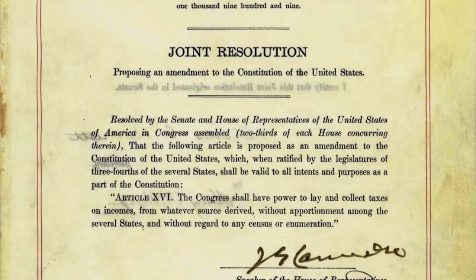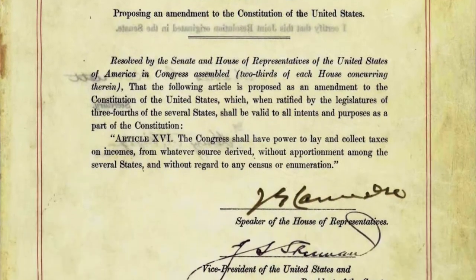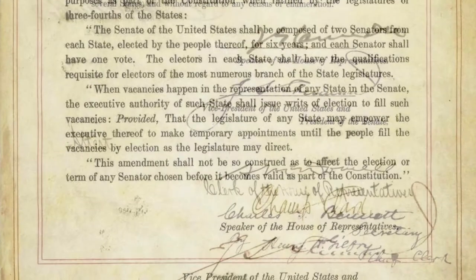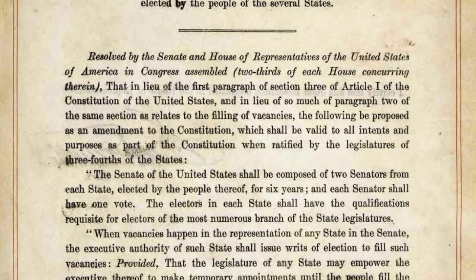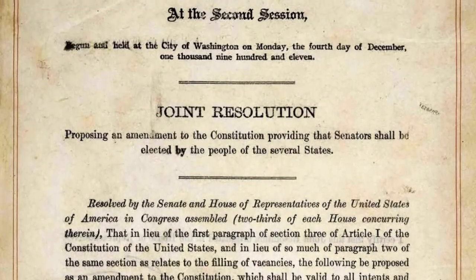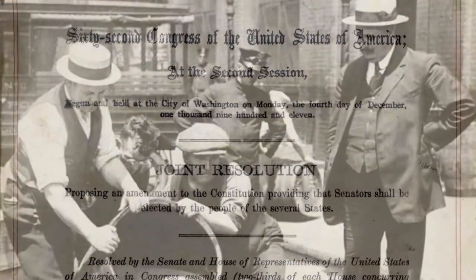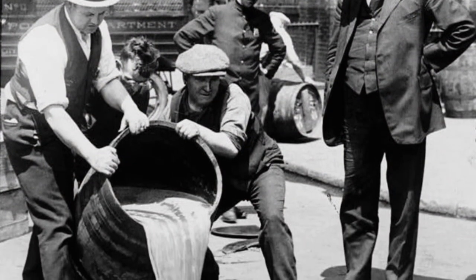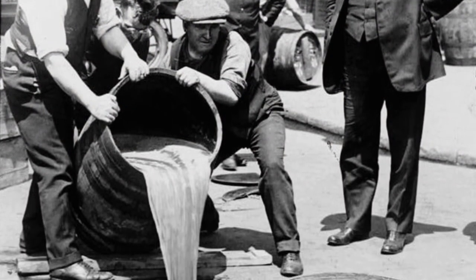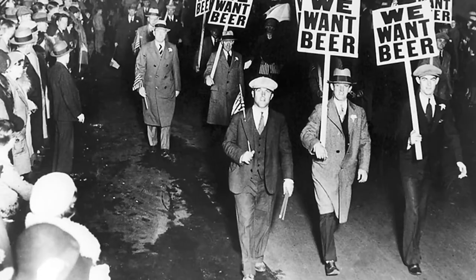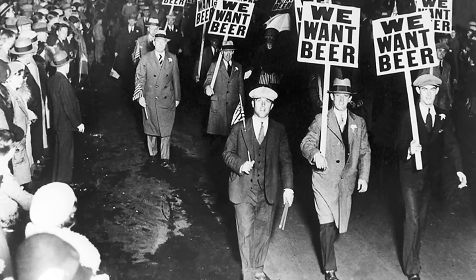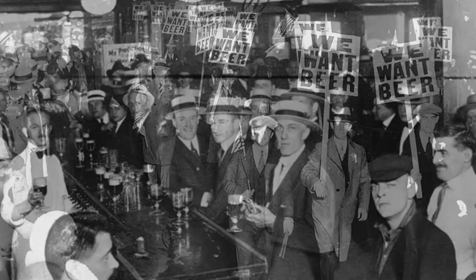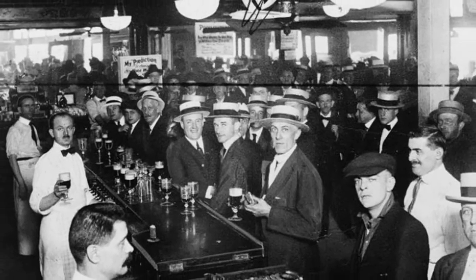After regulating the railroads and protecting the public's health as well as the environment, Roosevelt proceeded to create the 16th, 17th, and 18th Amendments. Ratified in 1913, the 16th Amendment allowed Congress to collect federal income taxes. Also ratified in 1913, the 17th Amendment required the direct election of senators. Finally, the 18th Amendment was ratified in 1919, banning the production, sale, or import of alcoholic beverages. The 18th Amendment was repealed in 1933 by the ratification of the 21st Amendment — the only time the U.S. has repealed an amendment.